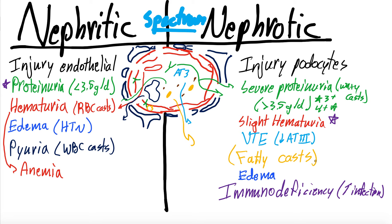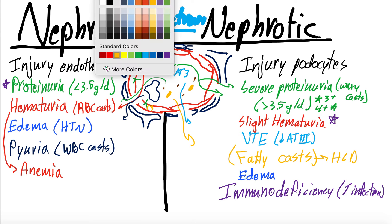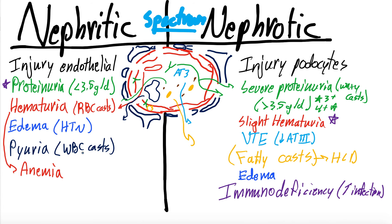In nephrotic syndrome, you get fatty casts and hyperlipidemia because the liver is pumping out lipoproteins into the bloodstream, some of which are excreted in the urine — more typical of nephrotic syndrome. Both nephritic and nephrotic syndrome can lead to azotemia, which is an elevation of BUN, and AKI with decreased GFR. It's more commonly discussed in nephritic syndrome, but azotemia and kidney injury can occur in nephrotic syndrome as well, as glomerular injury dysregulates blood flow and can cause afferent arterial dysregulation.